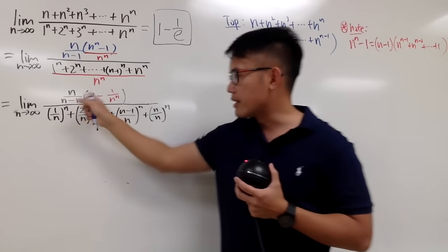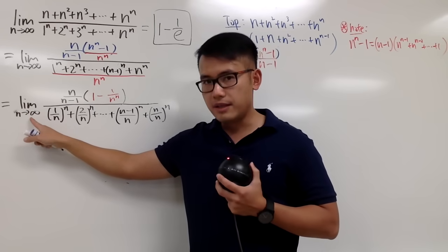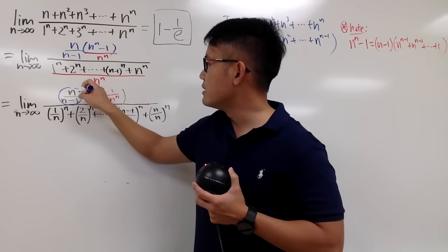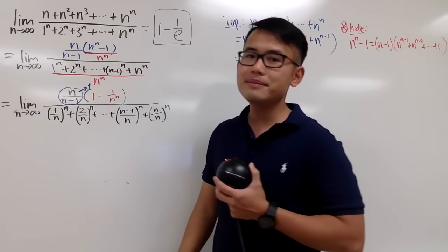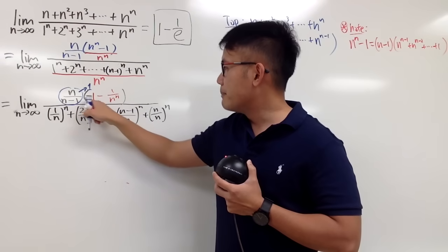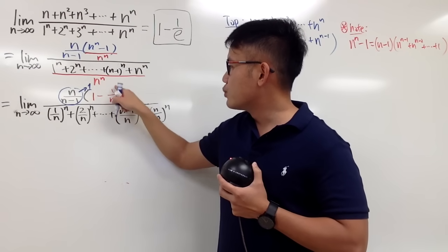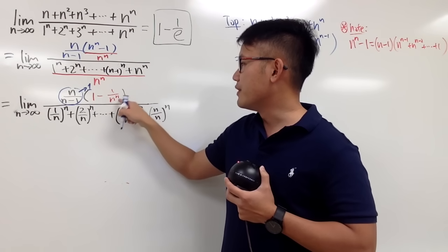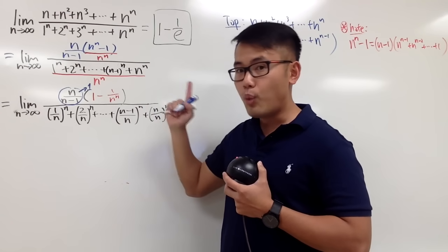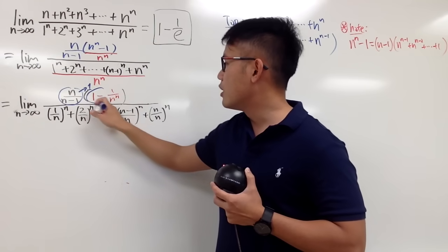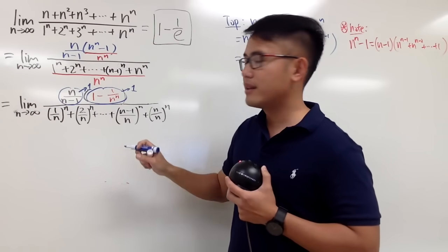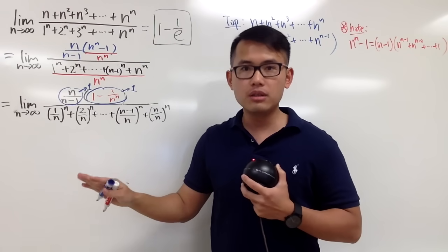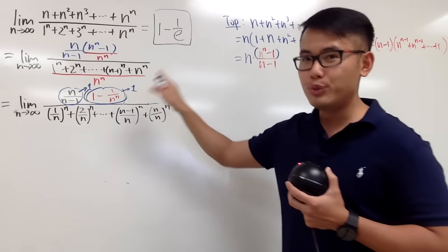Now let's look at the top. When n is approaching infinity, n over n minus 1 should be easy to see that it's just approaching 1. Next, we multiply by 1 minus 1 over infinity to the infinity power. Of course, 1 over infinity is 0, and 1 minus 0 is just 1. This right here is also approaching 1. So on the top it's just a product of two 1s — it's 1. So that's really, really nice, and we just have to focus on how to handle the bottom.